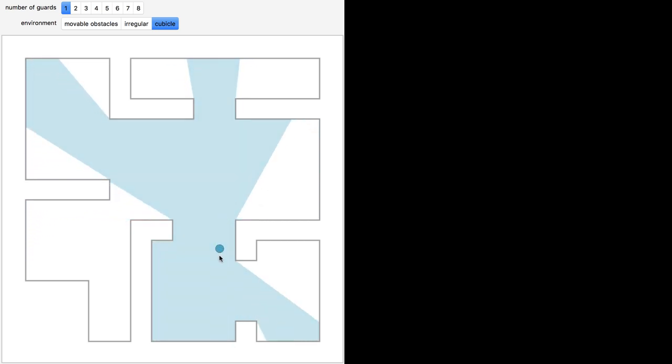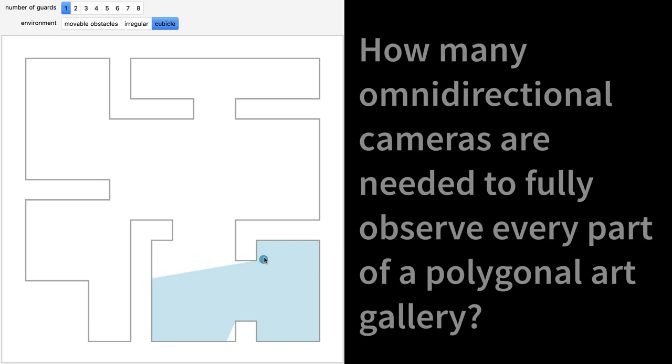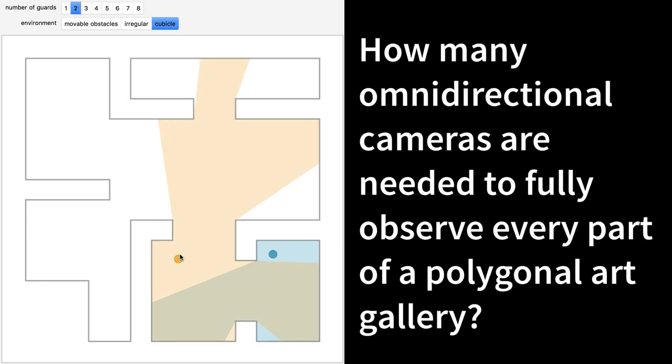Mathematically, the question is, how many omnidirectional cameras are needed to fully observe every part of a polygonal art gallery? You move the cameras by dragging the colored locators, or guards, to try and cover the polygon with the fewest guards.